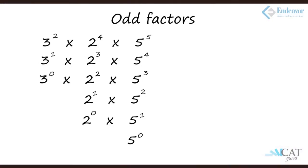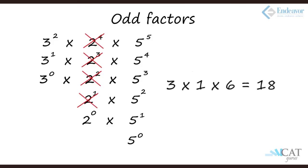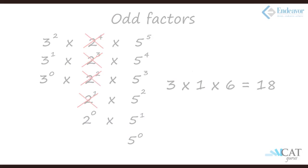Now let's look at odd factors. When we talk about odd factors, we cannot take any of the even numbers, so only 2 to the power 0 is possible for the 2-series. Going back, it will be 3 × 1 × 6, which is 18. So 4,50,000 has 18 odd factors.